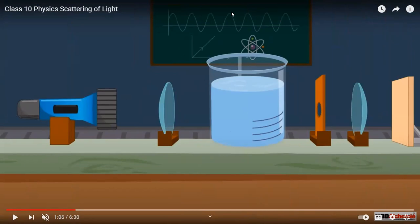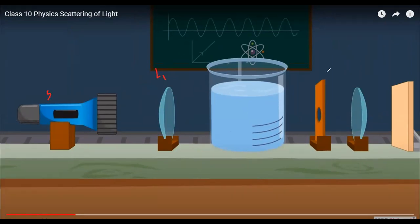In this experiment, we have different sources. You have the source of light S, you have lens L1, you have lens L2. You have a small screen with a hole on it so that it can pass a beam of light through. To note the image, you have a screen and you have a water tank filled with water. Initially, we will take a homogeneous solution — that is, clean water.